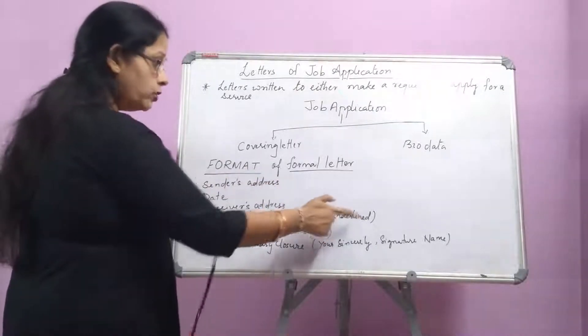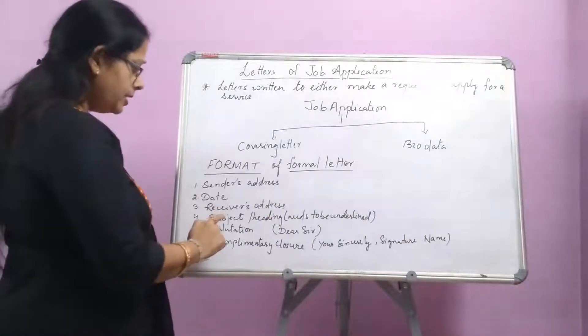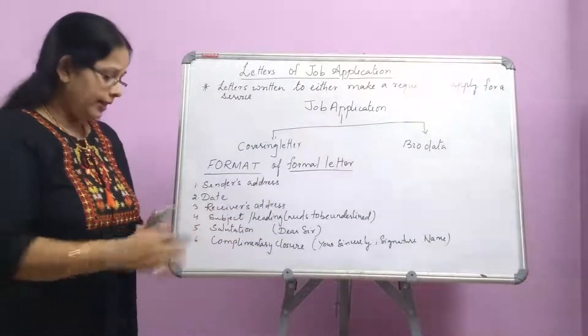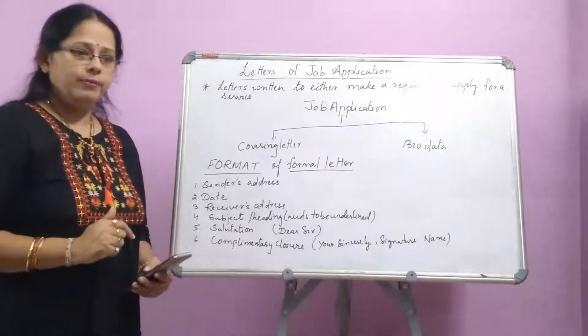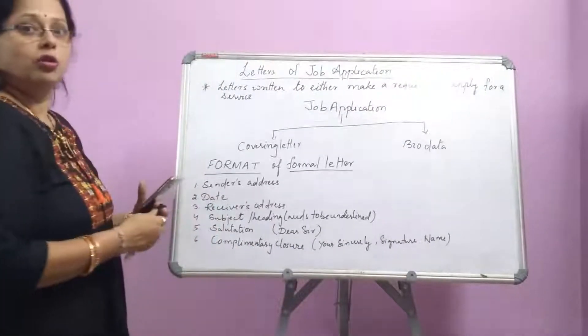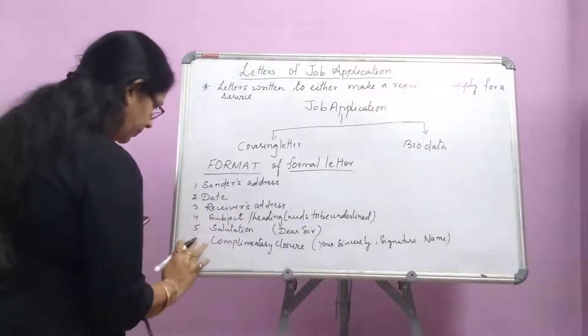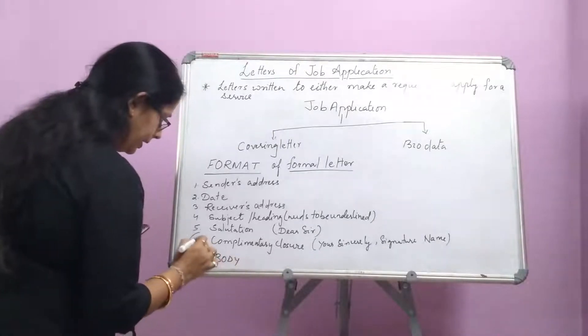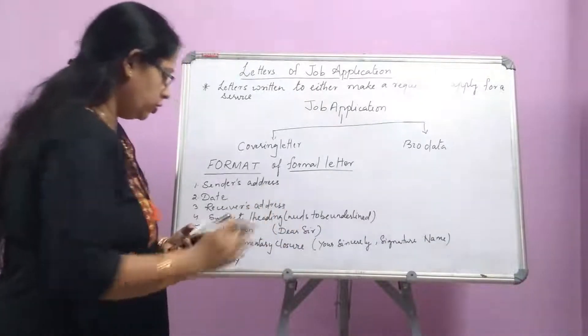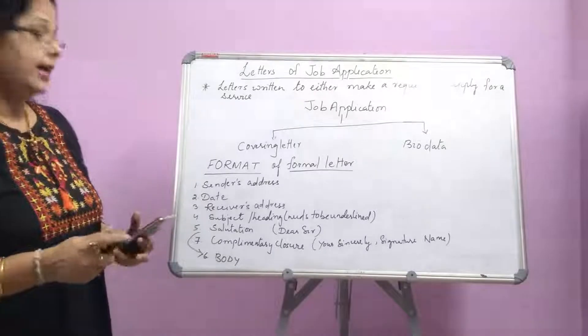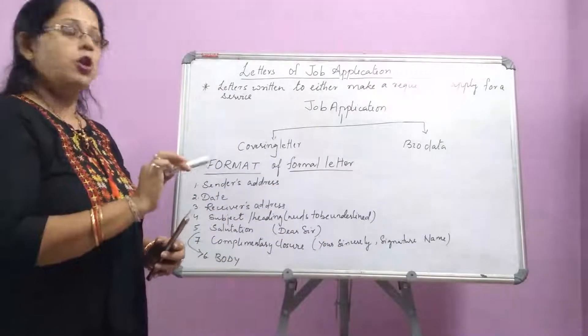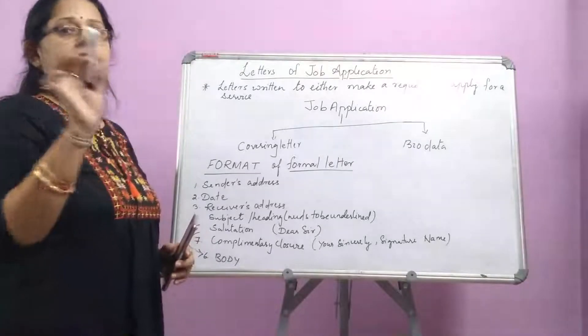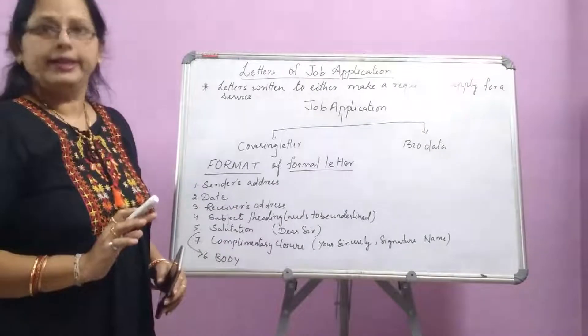Then your third thing is subject, or for what, what is your subject in your letter. But remember you need to underline the subject. Underline the subject very clearly. After your subject, your fourth is salutation. Salutation also I mentioned, that dear sir, and then after your salutation your body part will be there. Then number six, body of the letter, then will be your closure, that is a complimentary closure. Now when you are writing complimentary closure, means what is that, your sincerely, then your signature, and then below your signature you write your name very clearly.